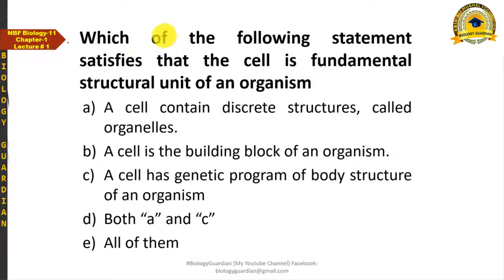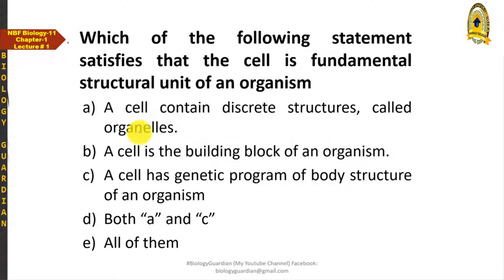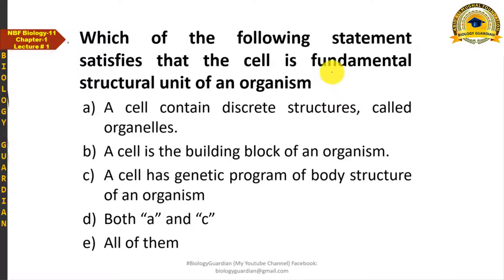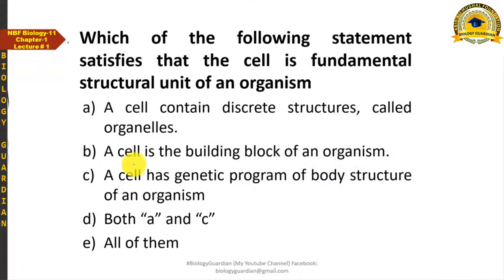From this point of view, a question can be asked: which of the following statements satisfies that the cell is the fundamental structural unit of an organism? The options include: (A) a cell contains discrete structures called organelles; (B) the cell is the building block of an organism; (C) the cell has a genetic program of body structures of an organism.